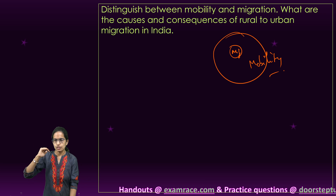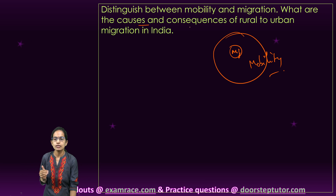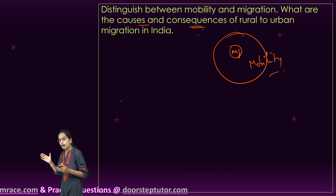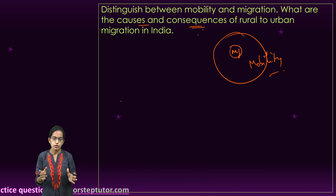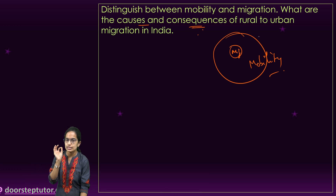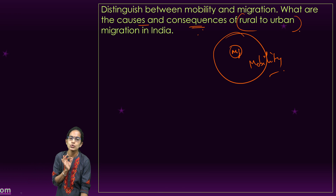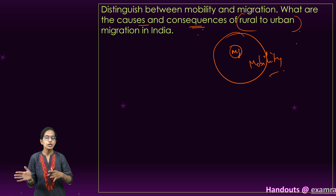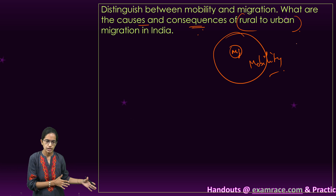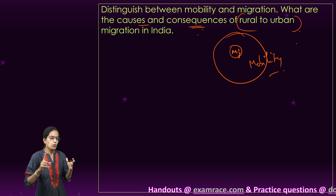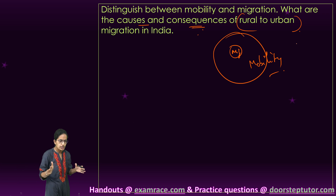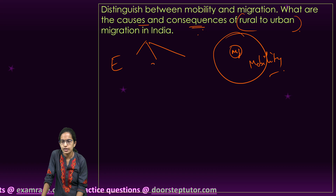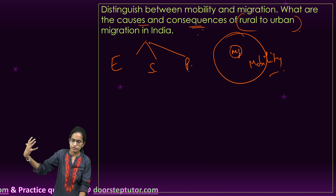The next section of the question focuses on the causes and consequences of migration. Here, what we need to understand is that specifically what is asked is rural-to-urban migration. So don't take into account rural-to-rural migration. When it comes to causes, you can classify them under three heads: economic, social, and political, as explained in the previous section.